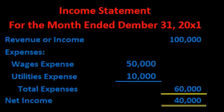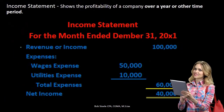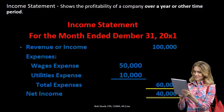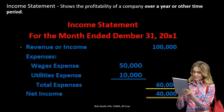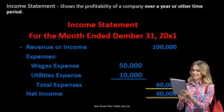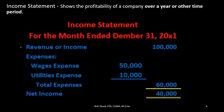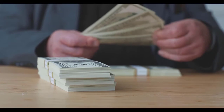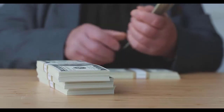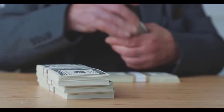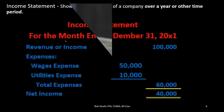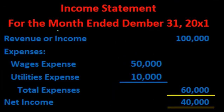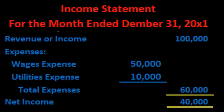The income statement is a timing statement — an action statement, unlike the balance sheet which is as of a point in time. You can think of the balance sheet as a noun: it just is what it is. The income statement is more like a verb: revenue is something happening over a time period, representing action — how much has been generated or earned over the month.